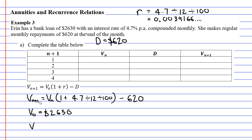Now we'll move on to V_1. Remembering that when we calculate V_1, to the right of our equal sign, we have V_0, because our subscript to the right is one less than our subscript to the left. We then copy down the rest of the formula: 1 plus 4.7 divide 12 divide 100 minus 620. Remembering that V_0 has already been calculated, it's $2,630, so we're going to substitute V_0 with $2,630 and then make our calculation.